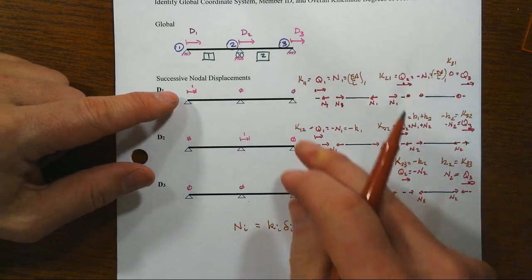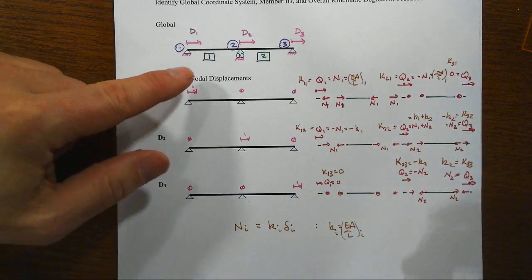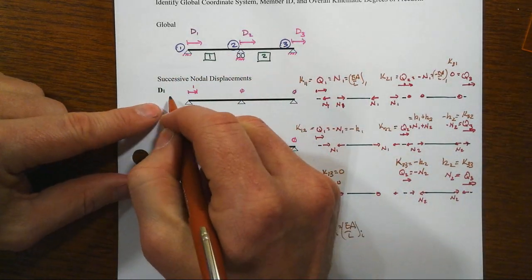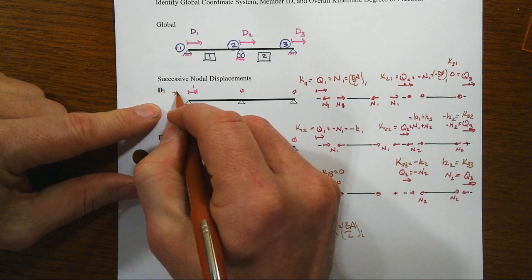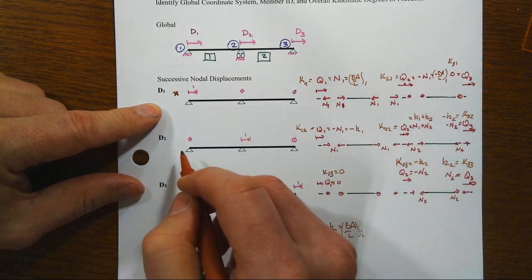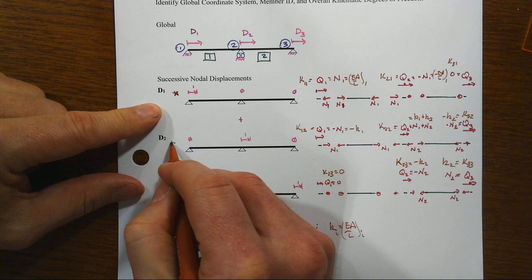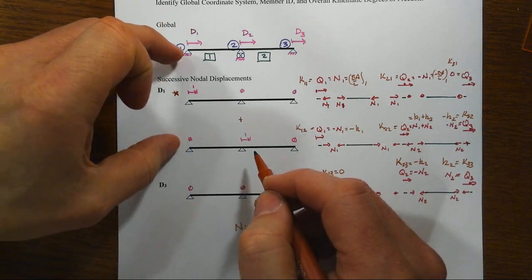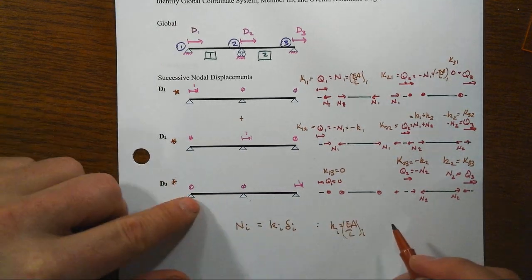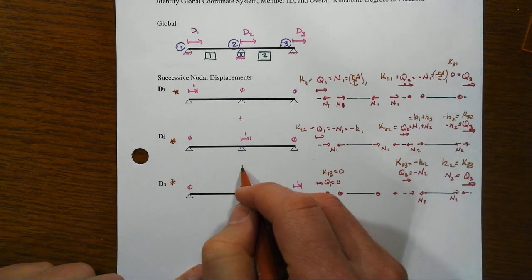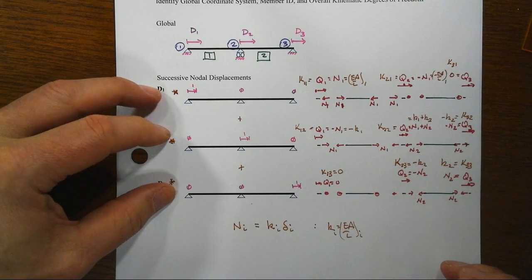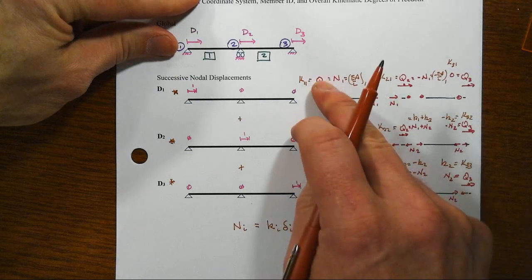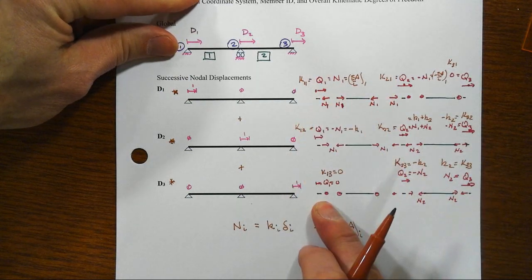Now in general, of course, these are not the actual displacements we have up in here. Here we have some general set, so if we take the unknown D1 times this unit pattern, and then add to it D2 times, and again, unknown, add that up there, and then D3 times this pattern, add it to all that superposition, we'll get back to what we wanted to begin with.